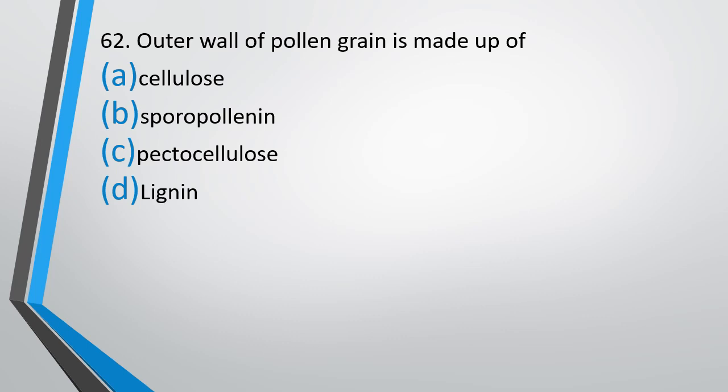Question number 62. The outer wall of pollen grain is made up of: cellulose, sporopollenin, pectocellulose, or lignin? Outer wall of the pollen grain, also called exine, is made up of - the correct answer is Option B, sporopollenin.